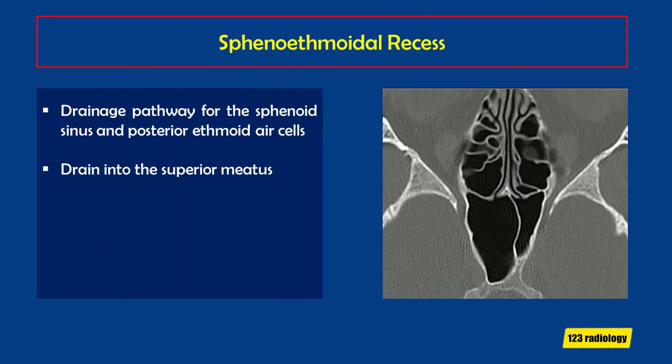The sphenoethmoidal recess is the drainage pathway for the posterior sinuses — the sphenoid sinus and posterior ethmoid air cells. This sphenoethmoidal recess drains into the superior meatus. As seen on this axial image, the sphenoid ostium drains into the sphenoethmoidal recess, and the posterior ethmoid air cells join this recess as well, which then drains into the superior meatus.